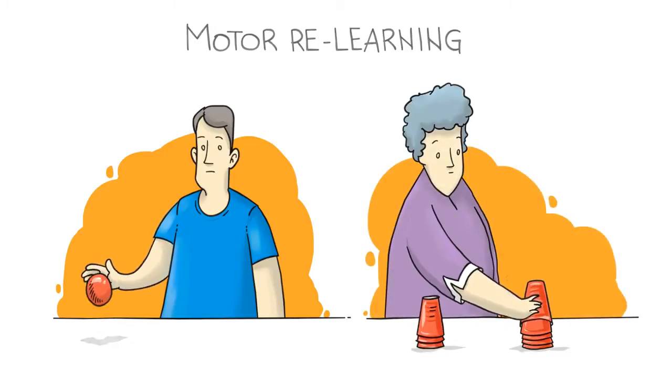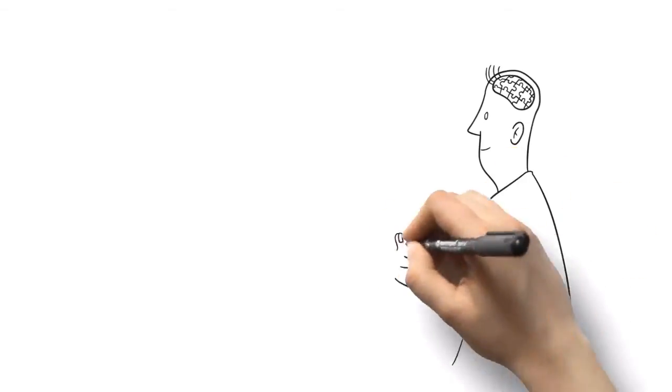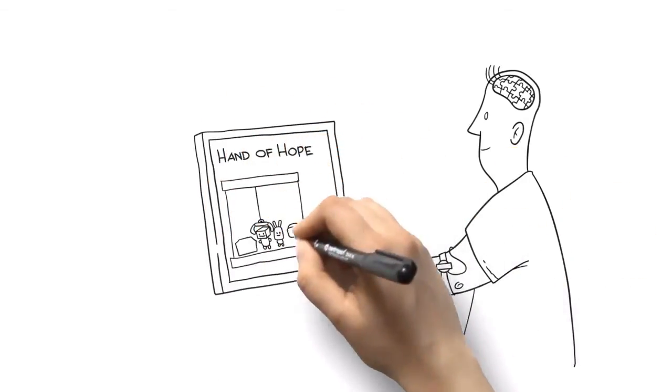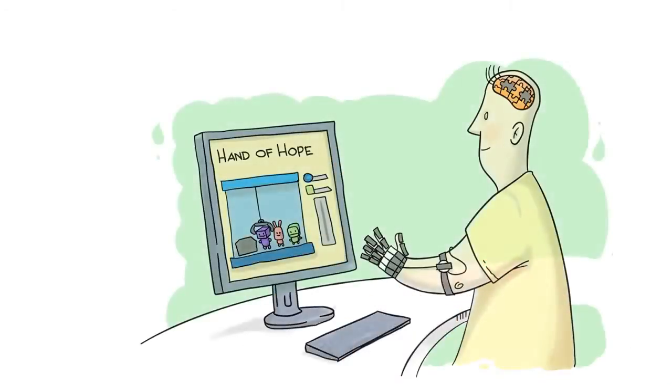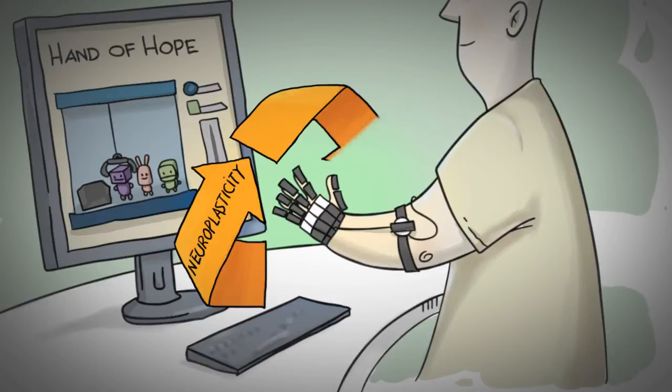So four months ago, Sam started using Hand of Hope, our innovative technology that helps stroke survivors regain hand function through active rehabilitation training. Built upon the principles of neuroplasticity, motor relearning, and neurorehabilitation, the Hand of Hope system is a comprehensive stroke rehabilitation mechanism.